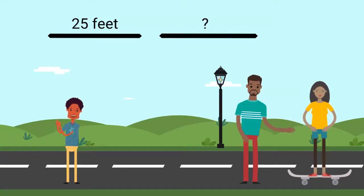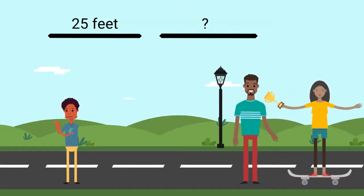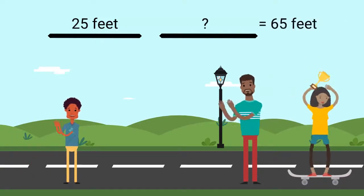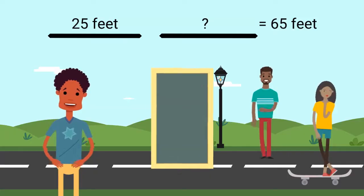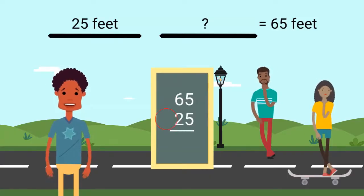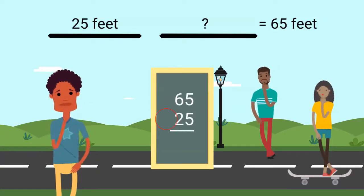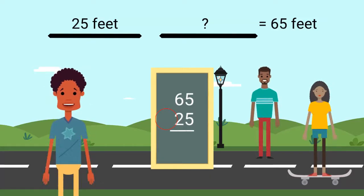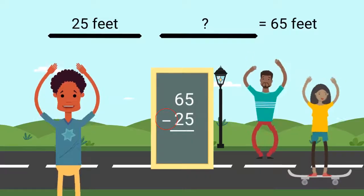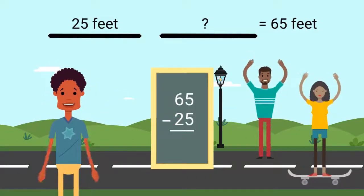Her dad told her that she rode 65 feet in all. To figure out how far she rode on her second time, should we add or subtract? We will need to subtract.